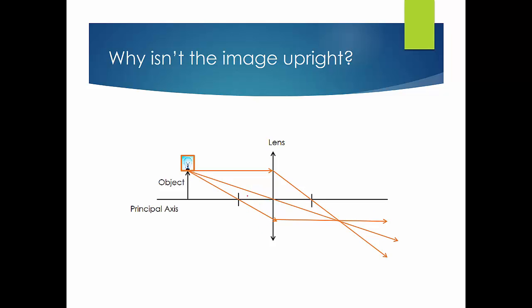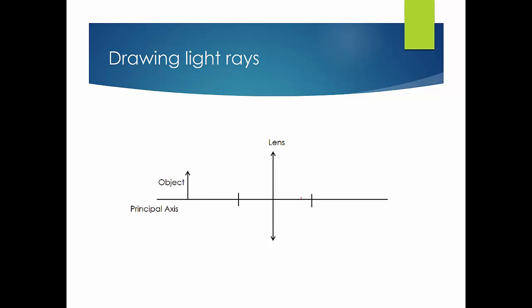Why isn't the image upright? If we consider a point at the center of the object and trace the three light rays for it, the image of that point forms lower than the image of the top of the object. Points lower on the object map to points even lower on the image side. So the image of the object ends up inverted — it is upside down compared to the original object.